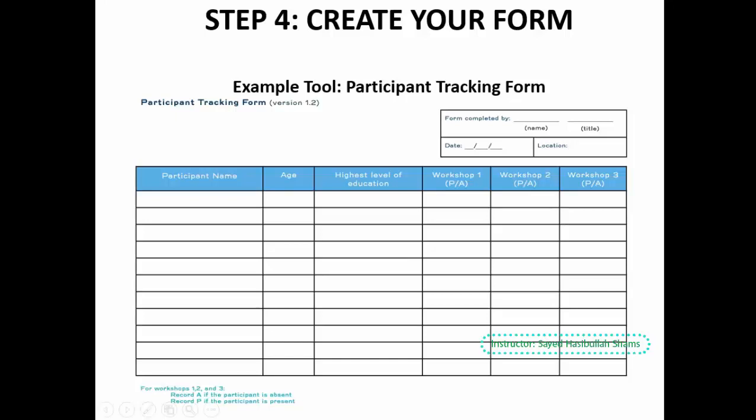Step four is: create your forms. This is very important. As I mentioned, we have two parts in one form. One is metadata, such as the title of the form or title of the tool, the responsible person who collected the data and their title, date, and location. We also have essential information related to the indicator — for example, an indicator on training could include number obtained, government official, and management.